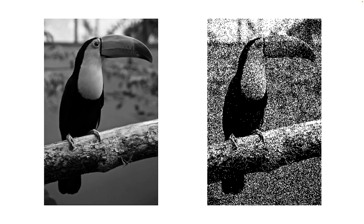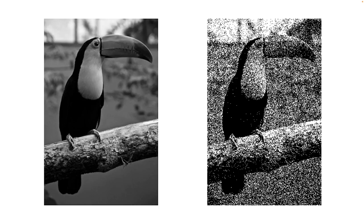So here's a picture of a toucan, where in the image on the right, gray levels have been converted directly to probabilities. But this doesn't look right, does it? The image looks washed out, with the middle shades being too light. What's going on here? What's going wrong?